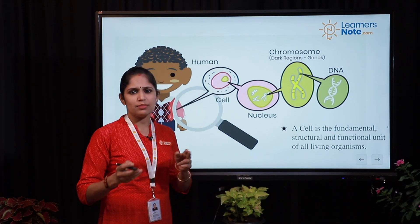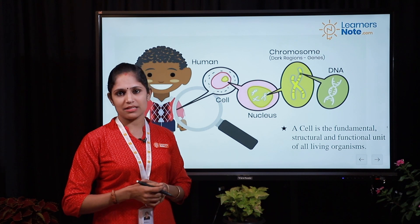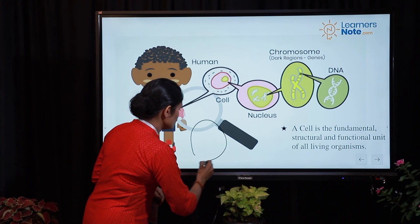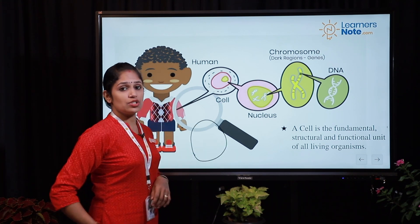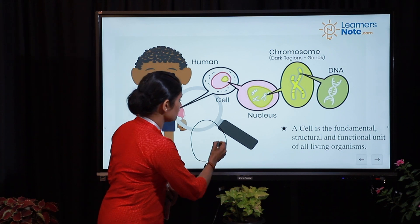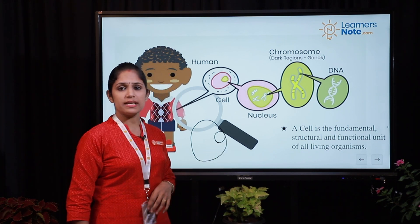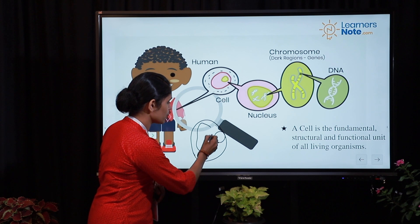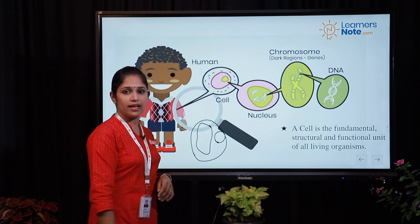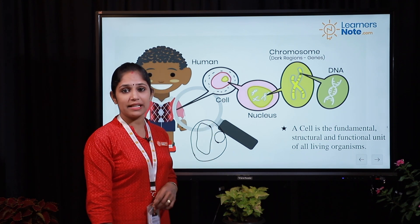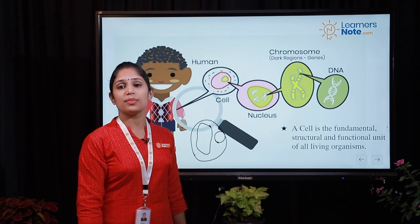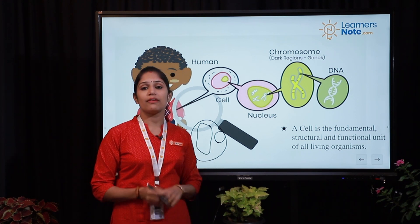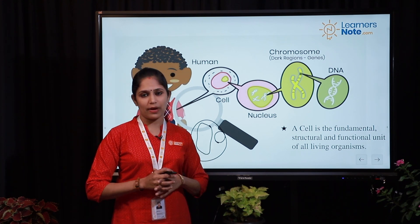There is some difference between the plant cell and the animal cell. In the case of a plant cell, the nucleus is situated in the peripheral region because in the central region they will have a large vacuole.